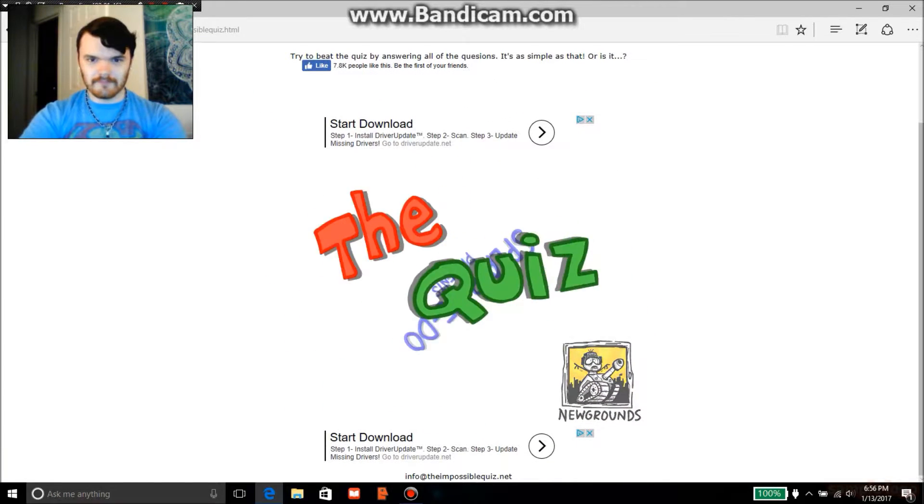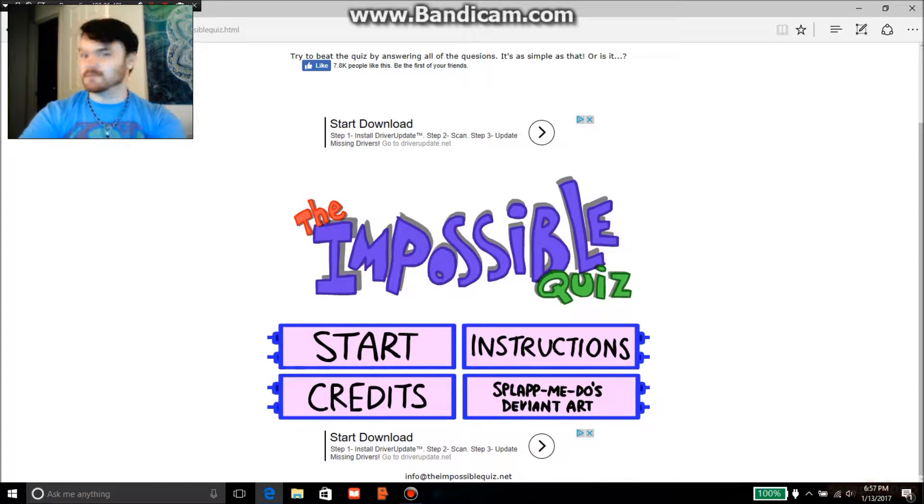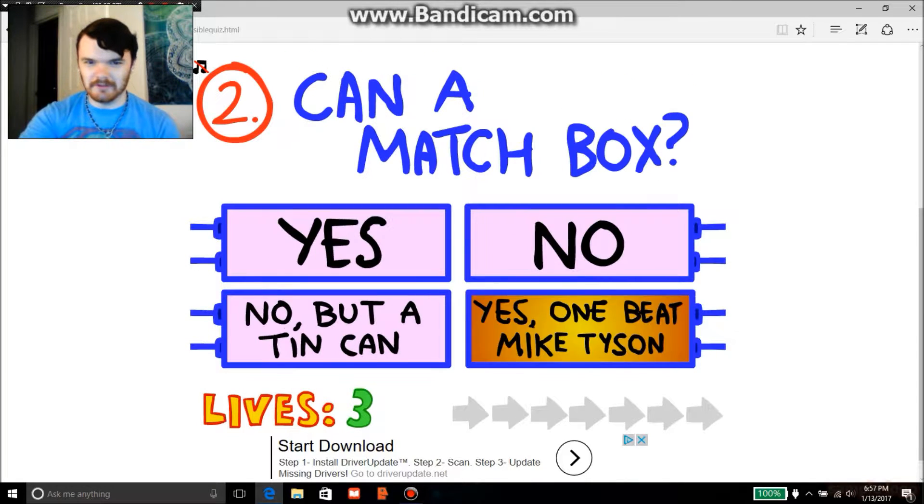Okay. Impossible Quiz. Okay. How many holes in the polo? Four. Ten on match. Box. Yes. One peter.